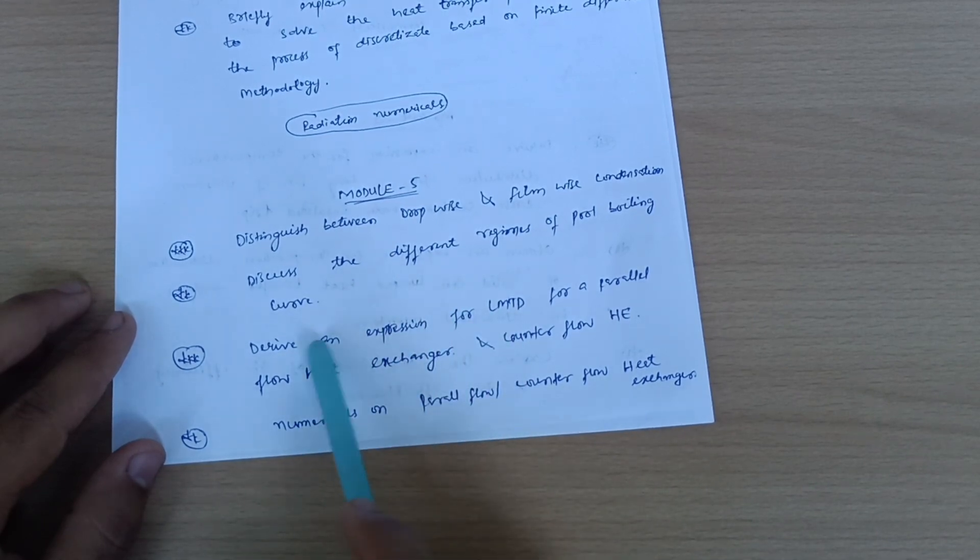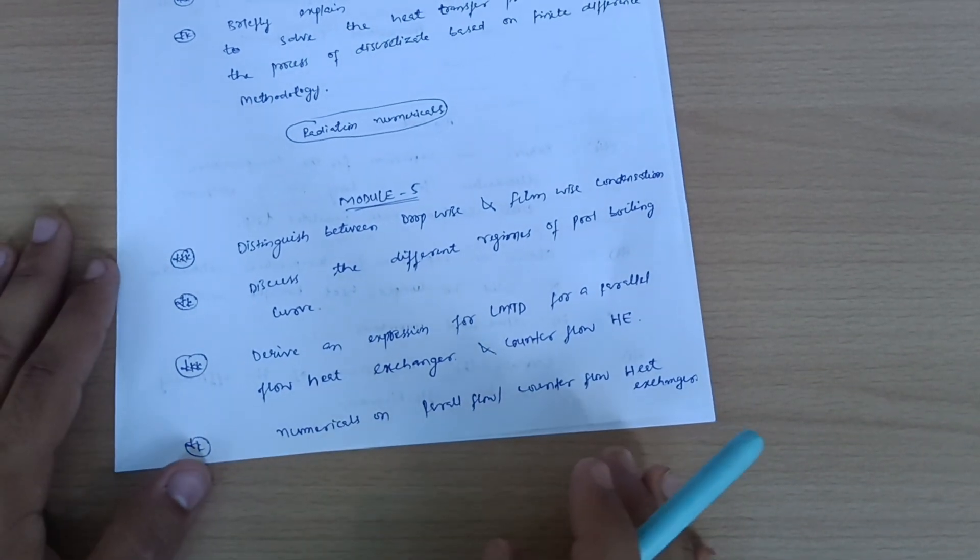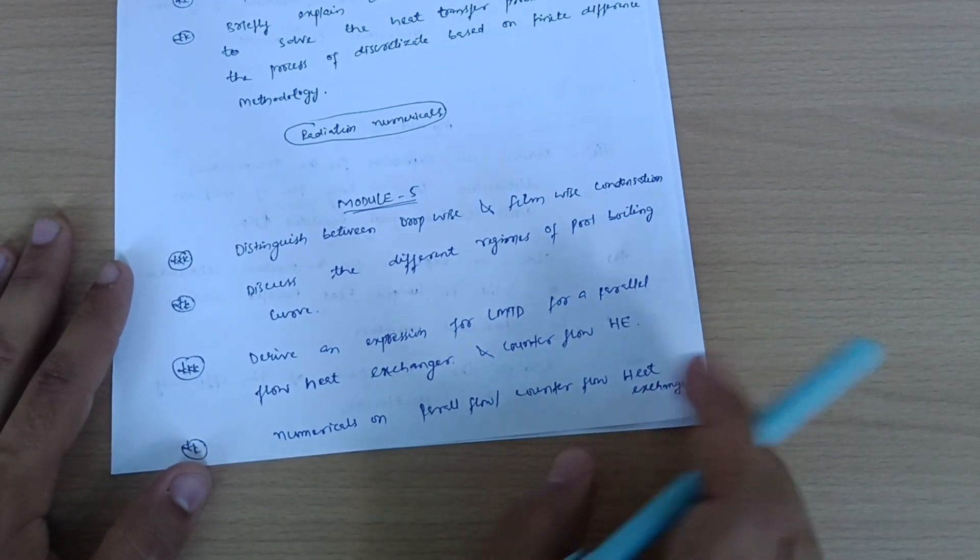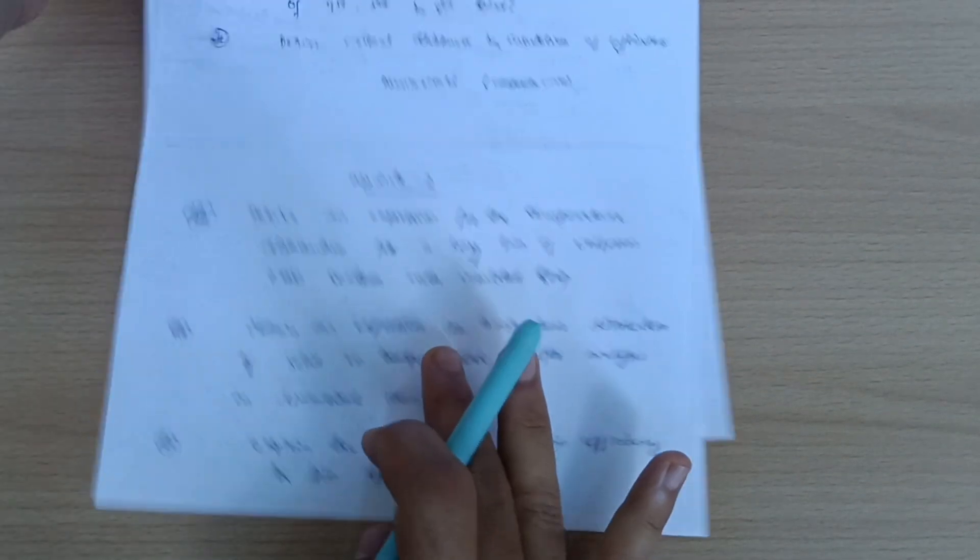Derive an expression for LMTD for parallel flow heat exchanger, and sometimes they will give an expression for LMTD for counter flow heat exchanger. Whenever you derive the expression for parallel flow and counter flow, you will be able to solve the numericals on parallel flow and counter flow. Very simple ones - at least try to practice four to five problems on this particular topic.